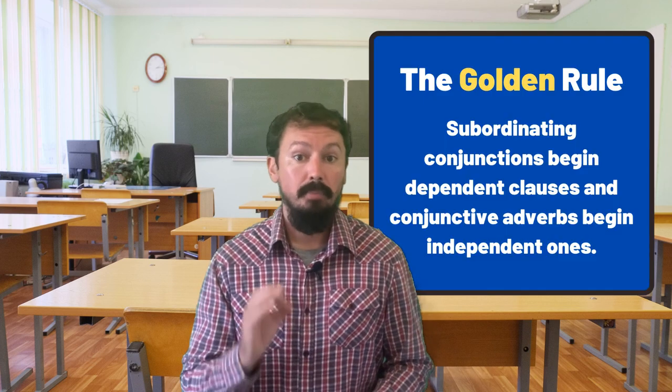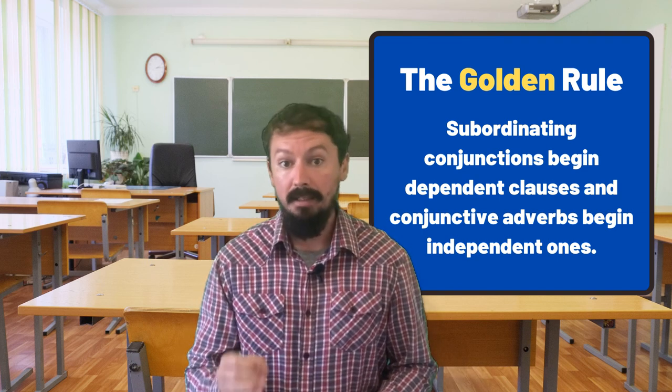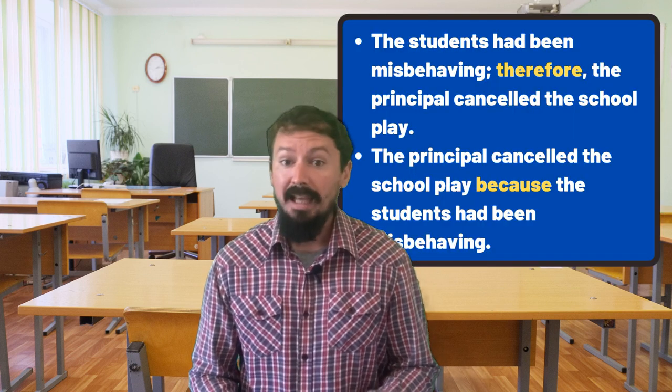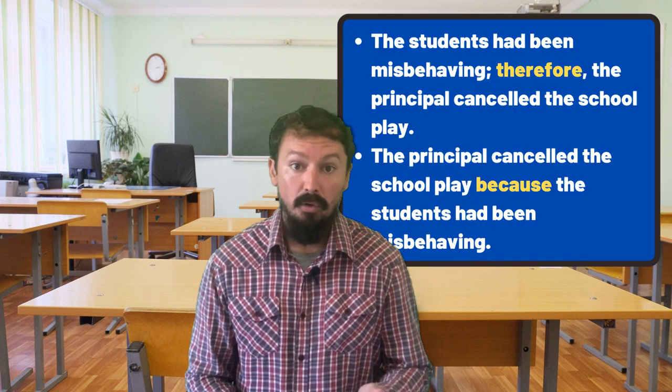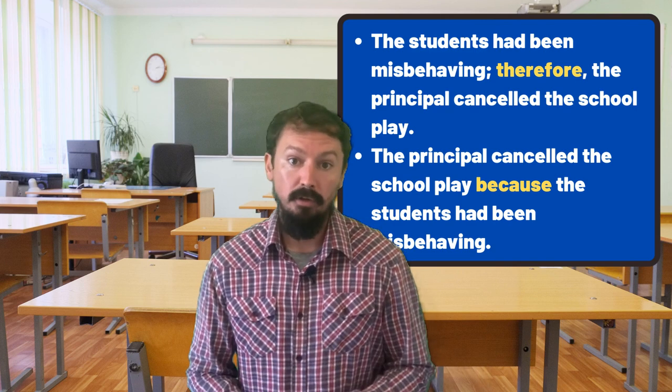Subordinating conjunctions and conjunctive adverbs may have similar meanings, but they are different parts of speech and thus used differently in sentences. Whilst they cause a lot of confusion for IELTS candidates, the rules for their use are actually quite simple. Primarily, you should remember one golden rule: subordinating conjunctions begin dependent clauses, and conjunctive adverbs begin independent clauses. Beyond that, you need to remember a few basic rules of punctuation — namely, that conjunctive adverbs follow semicolons and full stops and are then followed by commas, whilst subordinating conjunctions are not followed by commas. Once you can remember that, it will become much easier to get the rest correct and increase your score for IELTS writing.